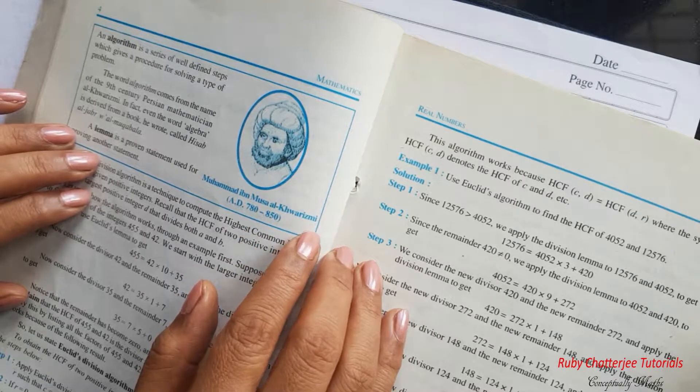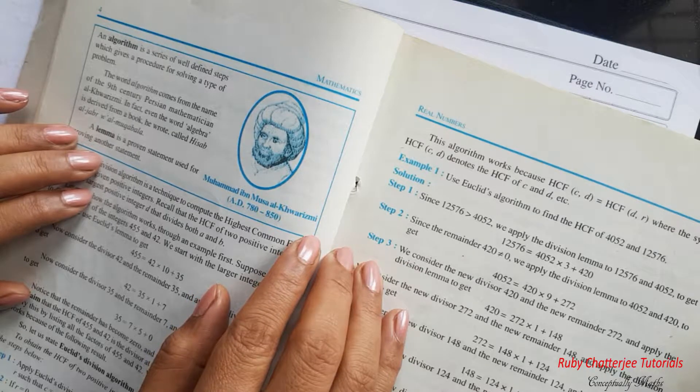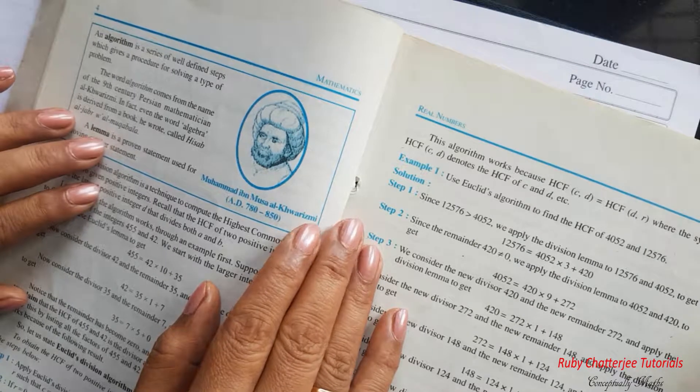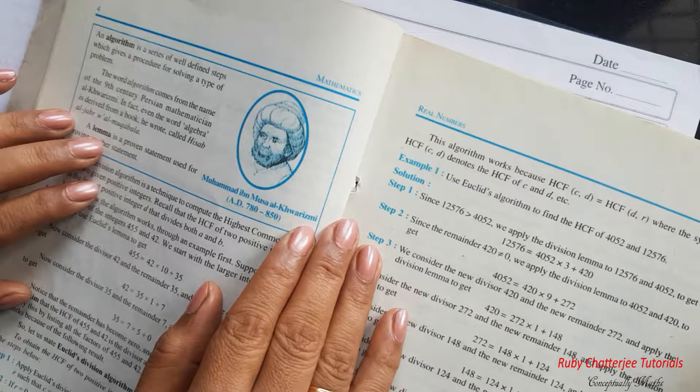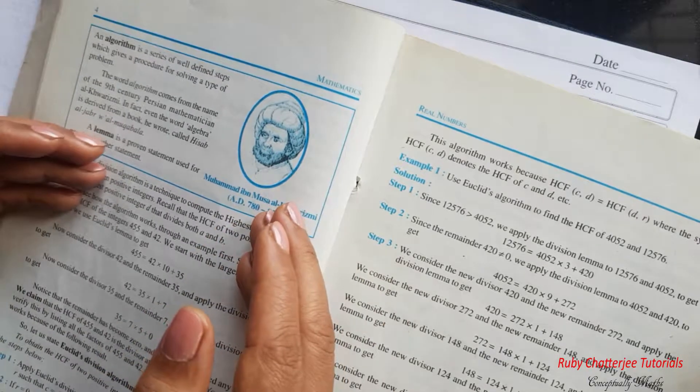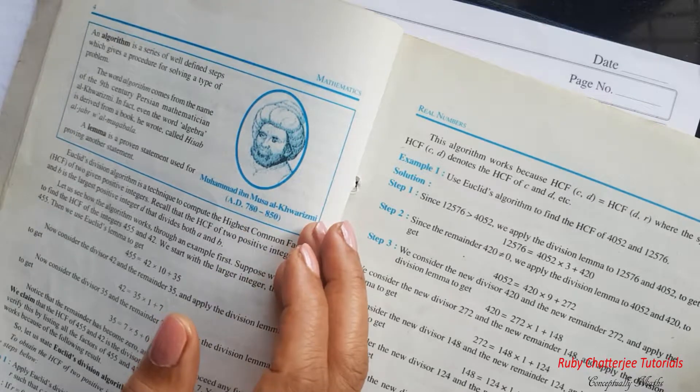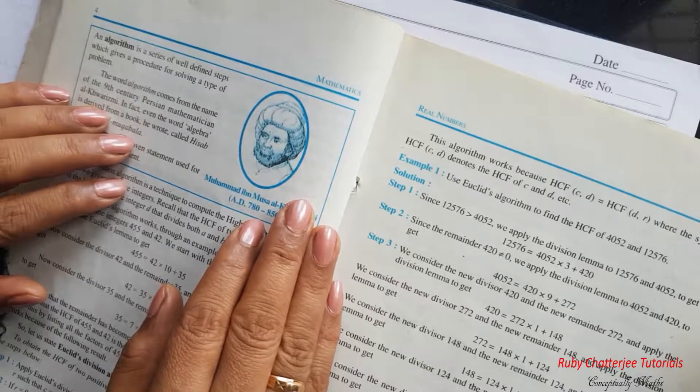And now a small trivia on this famous man. Did you know that Al-Khwarizmi was the most widely read mathematician in Europe in the late middle ages? Try to read more about him and that will make your study of the topic even more interesting. And now let us get back to Euclid's division algorithm.